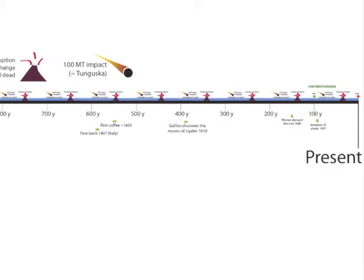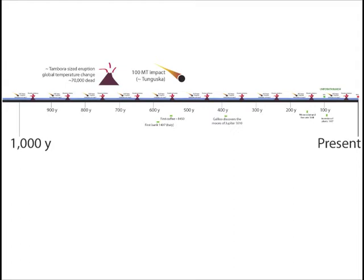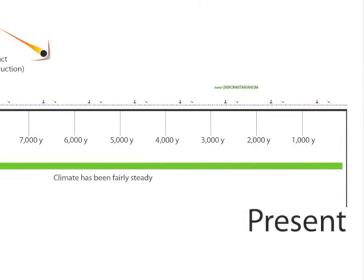Looking at 1,000 years instead of 100 years, the events that seem like catastrophes on a 100-year timescale begin to look pretty uniform, and a larger volcano and a larger meteoroid impact appear on average every 1,000 years.